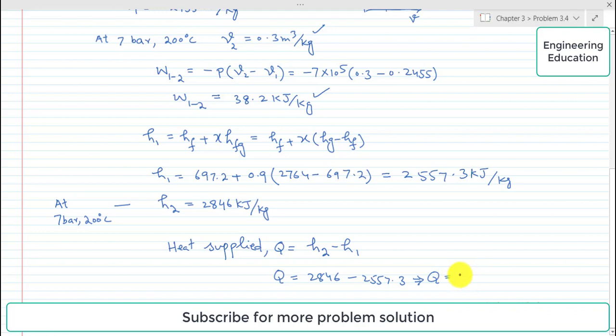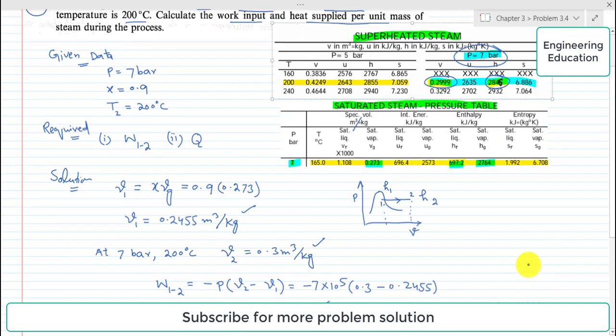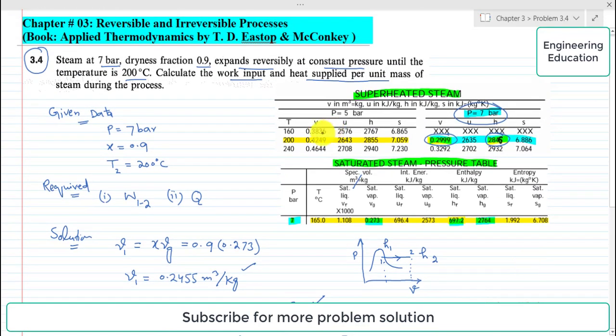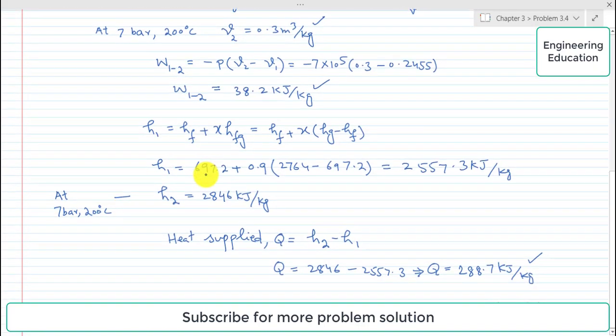So subtracting, we get Q equals 288.7 kilojoules per kilogram. So in this problem, two quantities were required to find: first, work input, and second, heat supplied per unit mass. That is the solution.